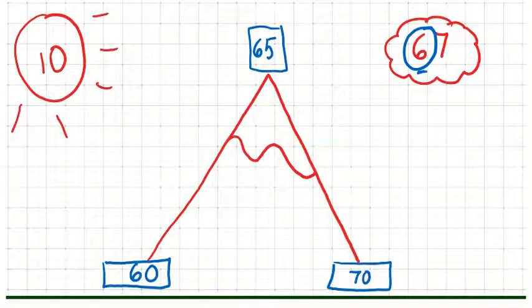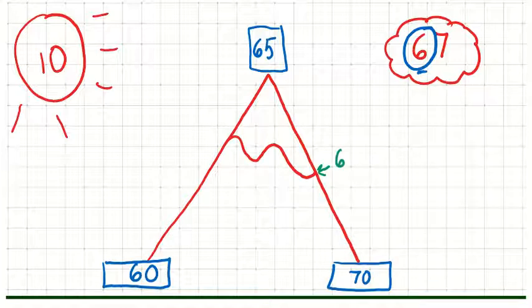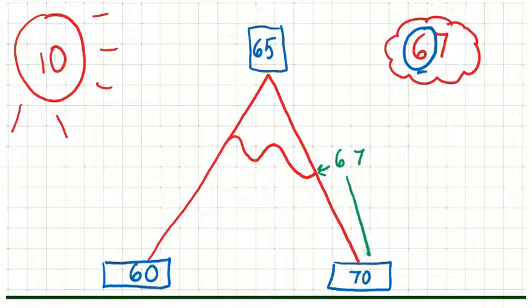Now what we need to do is take our original number of 67 and put it on the mountain. So 67 would be after 65, so it would be about here somewhere. We're going to put 67 in there. This shows that we would round it to 70. He's going to ski down the mountain to get rounded to the nearest ten.